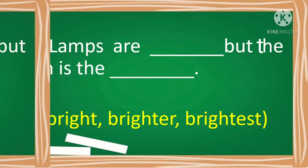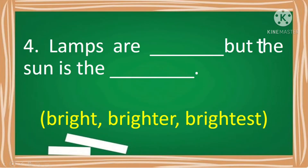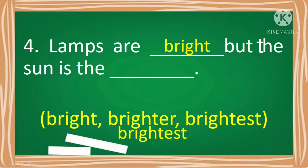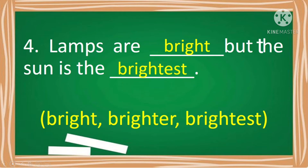Number four. Lambs are blank, but the sun is the blank — bright, brighter, brightest. The correct answers are: lambs are bright, but the sun is the brightest.